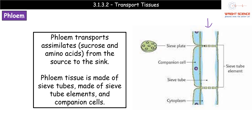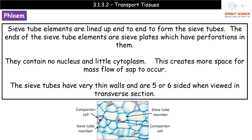Looking at a diagram, the sieve tube elements are on one side and the companion cells — the bluish colored ones — are attached to the side of the sieve tube elements. The sieve tube elements line up end to end to form the sieve tube itself. Rather than solid end walls, they have sieve plates — perforated end walls that allow larger molecules easier movement through the tube. Sieve tube elements have no nucleus and very little cytoplasm, creating more space for mass flow of the sap. Having a nucleus and lots of cytoplasm would restrict space and impede that mass flow process.